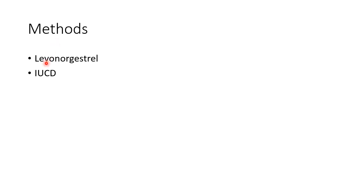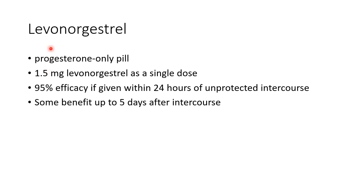Now let us see about the various methods of emergency contraception. The two licensed methods for emergency contraception are levonorgestrel and the intra-uterine contraceptive device. Let us see about each of them in detail.